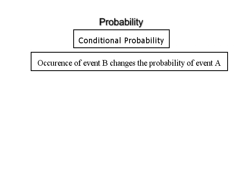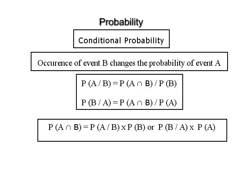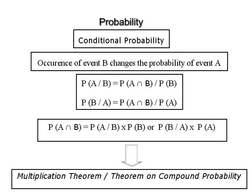Conditional probability. If the occurrence of event B changes the probability of the event A, then it is called the conditional probability of the event A given that B has occurred. It is given by P(A|B) = P(A ∩ B) / P(B). Similarly, P(B|A) = P(A ∩ B) / P(A). On rearranging the terms, we get P(A ∩ B) = P(A|B) × P(B) = P(B|A) × P(A). This is called the multiplication theorem or theorem on compound probability.